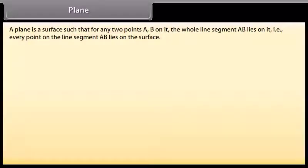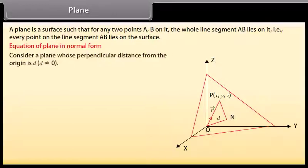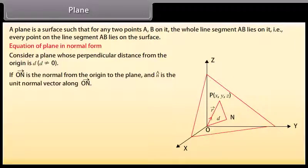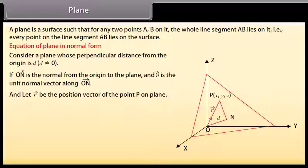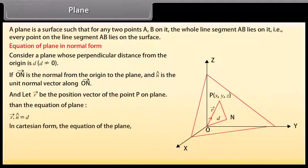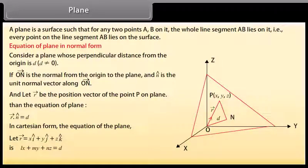Plane. A plane is a surface such that for any two points A and B on it, the whole line segment AB lies on it. Equation of plane in normal form: consider a plane whose perpendicular distance from the origin is D (not equals 0). If vector ON is the normal from the origin to the plane and cap N is the unit normal vector along vector ON, let vector R be the position vector of point P on the plane. Then the equation of the plane is vector R dot cap N equals D. In Cartesian form, if vector R equals Xi-cap plus Yj-cap plus Zk-cap, the equation is LX plus MY plus NZ equals D, where L, M, N are the direction cosines of cap N.